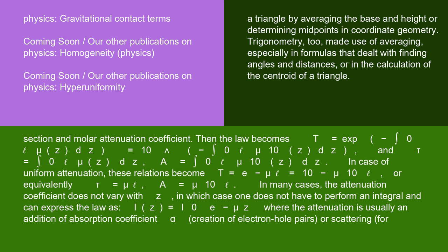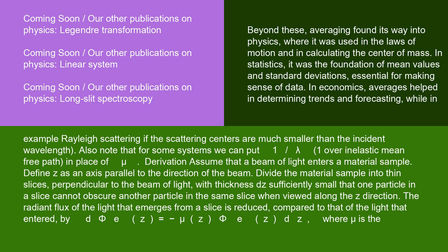The Napierian attenuation coefficient μ and the decadic attenuation coefficient μ₁₀ = μ/ln(10) of a material sample are related to its number densities and amount concentrations. The law becomes: T = exp(−∫₀ˡ μ(z) dz) = 10^(−∫₀ˡ μ₁₀(z) dz) and τ = ∫₀ˡ μ(z) dz = ∫₀ˡ μ₁₀(z) dz. In many cases the attenuation coefficient does not vary with z, allowing the law to be expressed as: I(z) = I₀ e^(−μz), where attenuation is usually an addition of absorption coefficient α, creation of electron-hole pairs, or scattering (for example Rayleigh scattering if the scattering centers are much smaller than the incident wavelength).